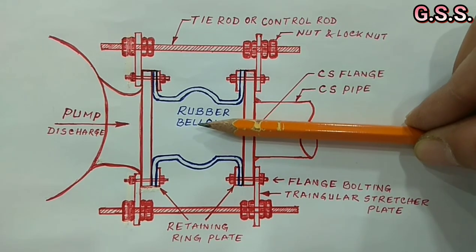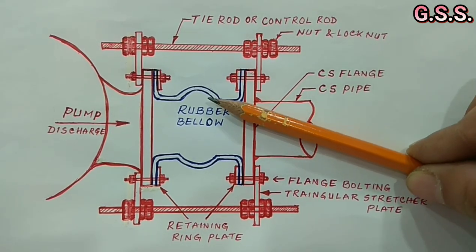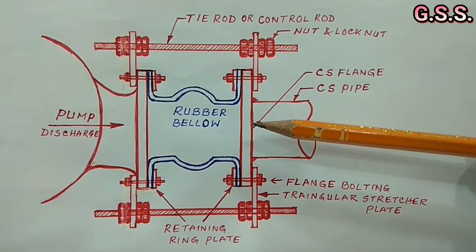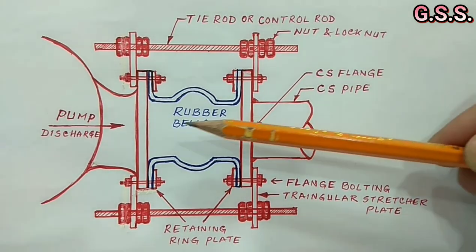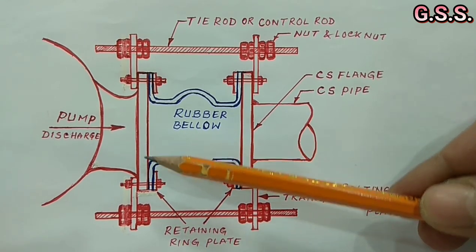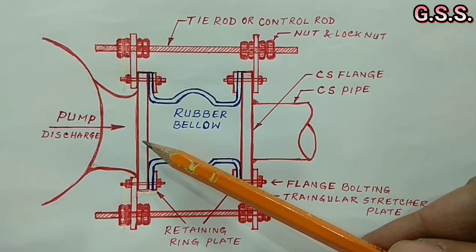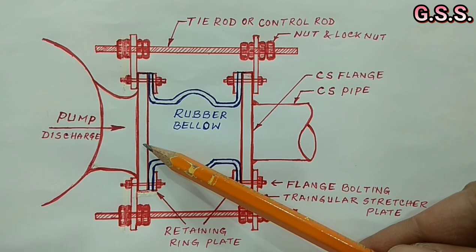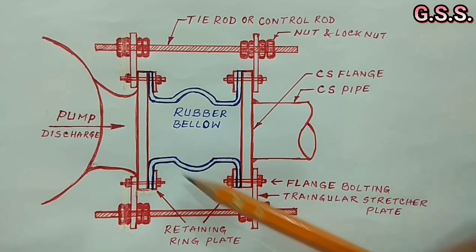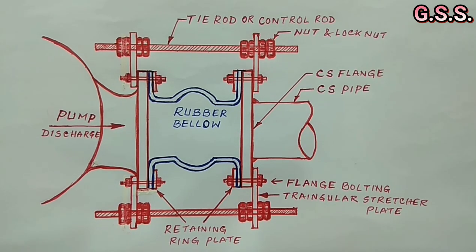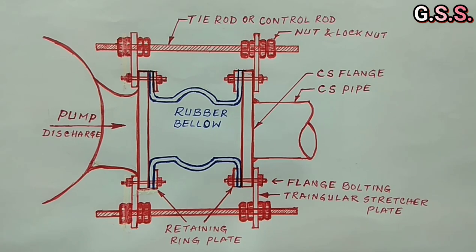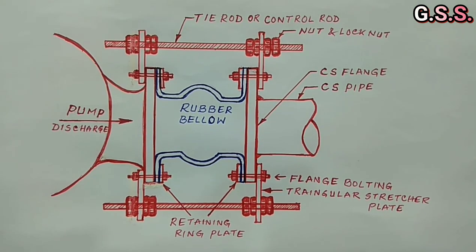With this minor misalignment, if we tight bolts of steel flange with pump nozzle, then stress will be developed on pump nozzle and pump nozzle gets loaded. If piping misalignment is more, huge stress will be developed in pump nozzle and pump nozzle or pump casing may crack.